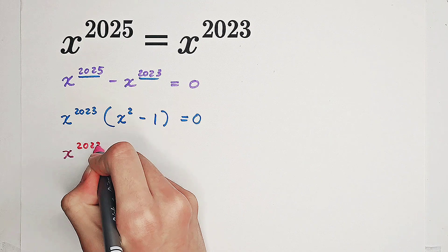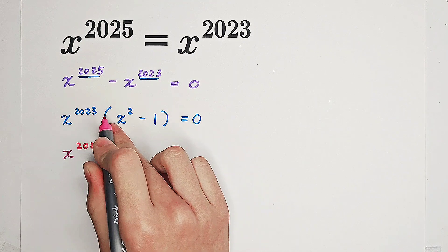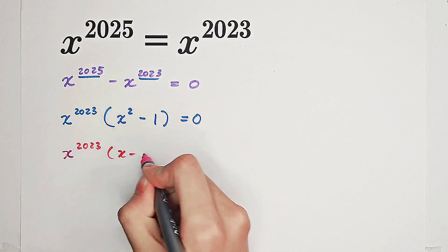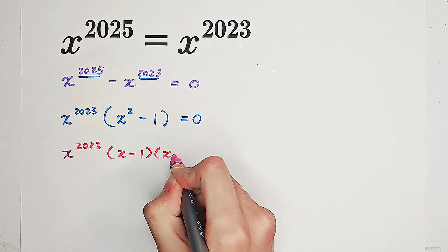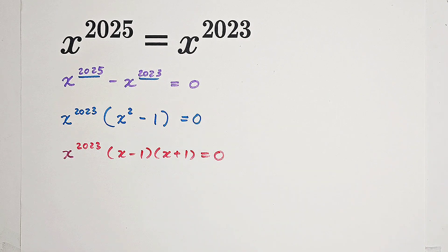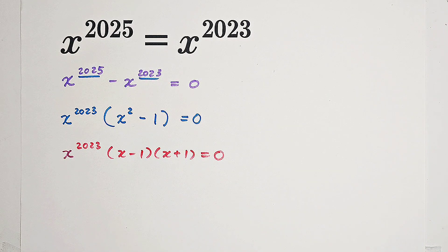x^2023 times (x² - 1) can factorize as x^2023(x - 1)(x + 1) = 0. And now we can get three solutions.